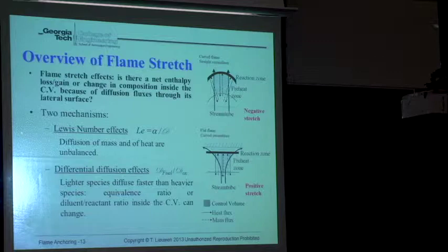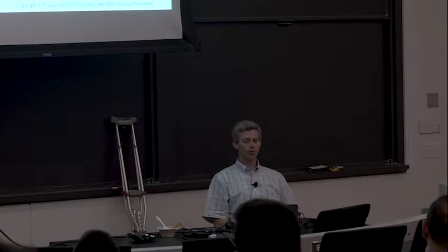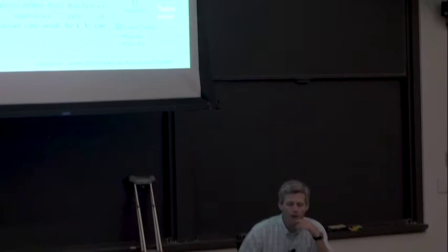The basic question when looking at flame stretch is: is there a net enthalpy loss or gain inside the control volume due to diffusion fluxes through its lateral surface? And the other question is: is there a net change in composition inside the control volume because of diffusion fluxes through the lateral surface?